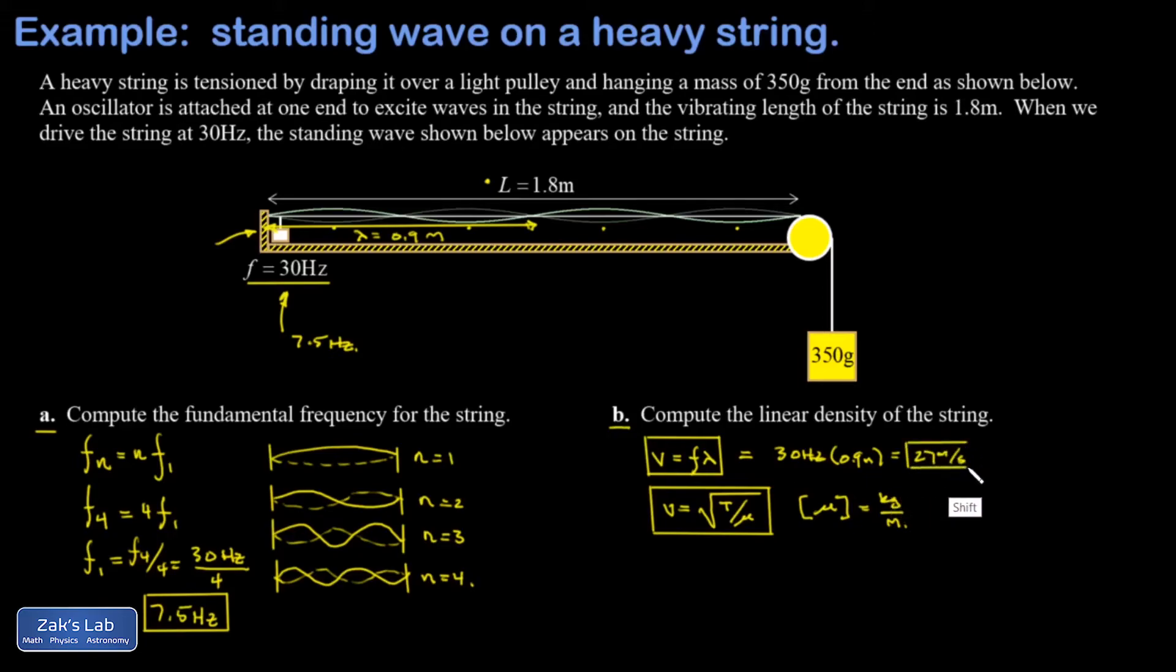I think I'll go ahead and get the tension on the string right now. This thing is tensioned by hanging a mass off of it, and the mass is not accelerating. That means the force of gravity down on this thing is equal to the tension in the string.